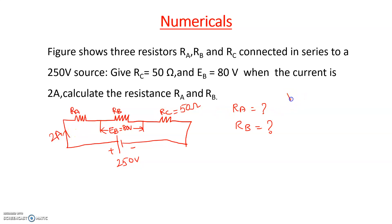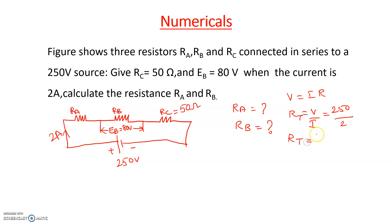Using Ohm's law, R equals V by I. The total resistance RT equals applied voltage 250 volts divided by total current 2 amperes, which gives RT equal to 125 ohms. In a series circuit, the equivalent resistance equals the summation of all the individual resistances in the circuit.